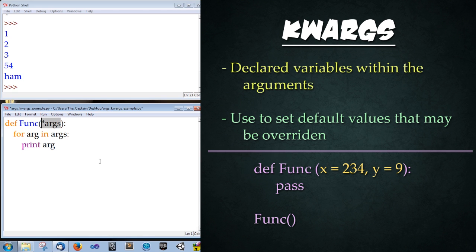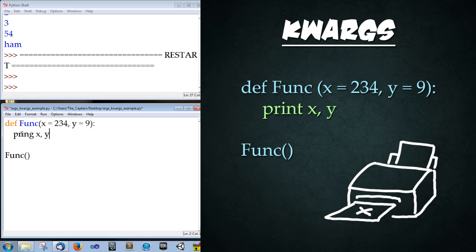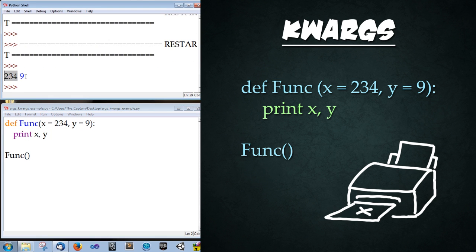In Func I'm going to replace the arguments with x=234 and then y=9. After that I'm just going to replace everything else with pass. Now if we try to run this function, let's type Func() - save, F5, and it works perfectly. We can actually replace this pass with print x, y. Save that. Run it again. Oops, I misspelled print.